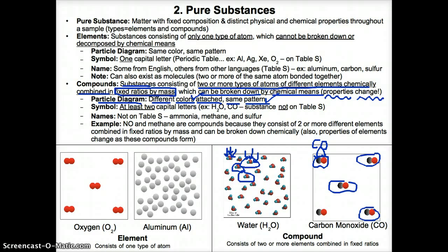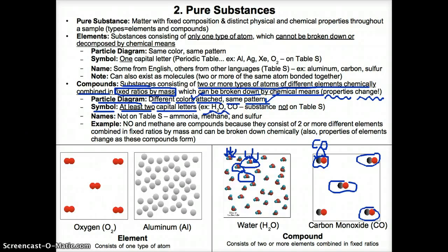In terms of a symbol, you can tell you have a compound if you have at least two capital letters. For example, H2O has two capital letters — H and O — so that tells you it's a compound. CO is also a compound because you have two capital letters, C and O. Since you have at least two capital letters in each of these, you know you have a compound.